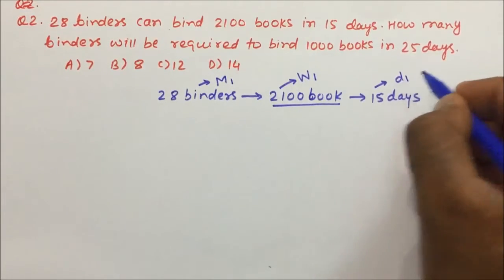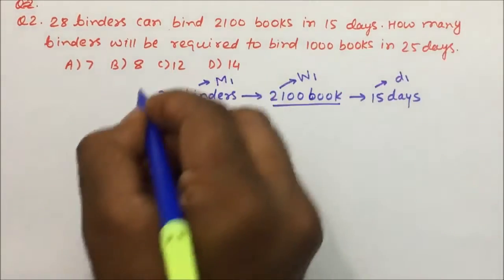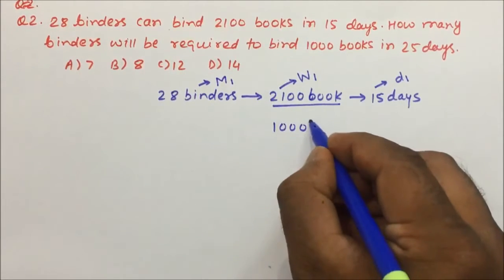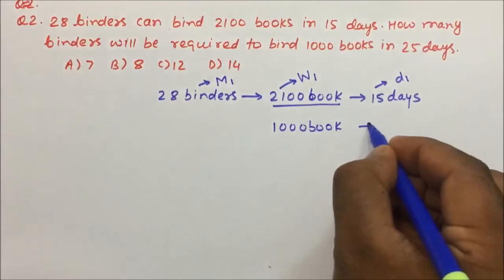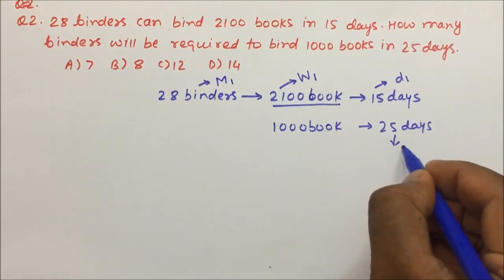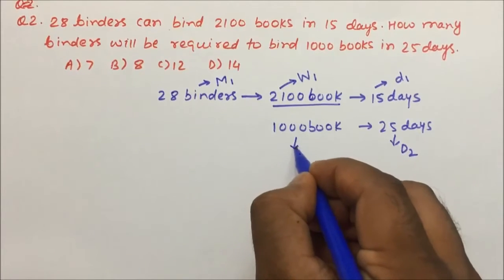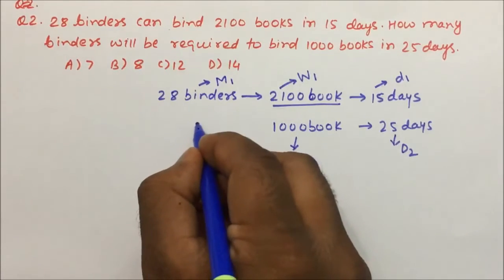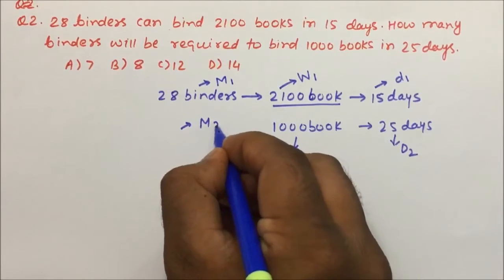Then they are asking how many binders will be required to bind 1000 books in 25 days. D2 is given, and binding 1000 books is work, so W2 is given, and we have to find M2.